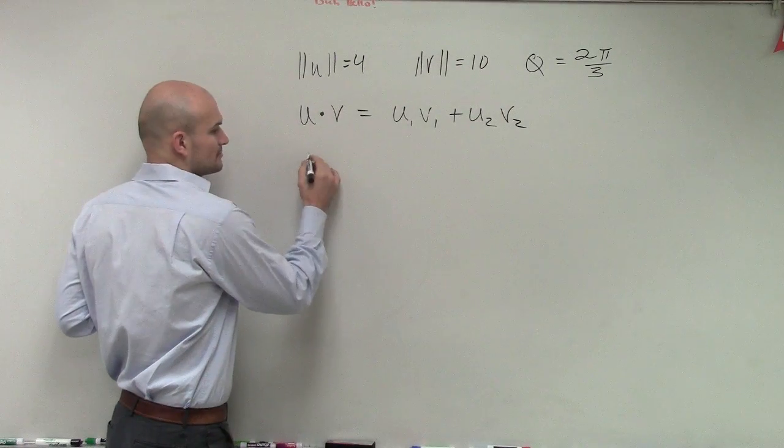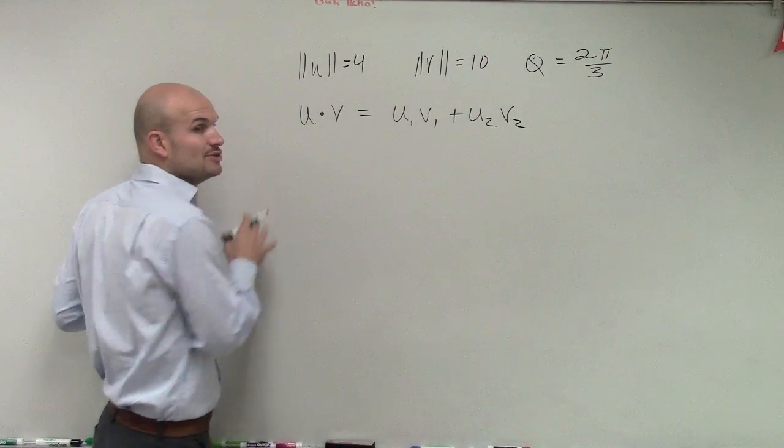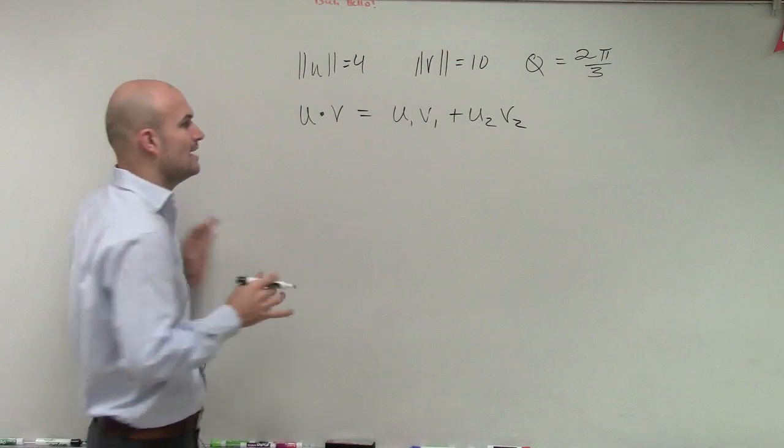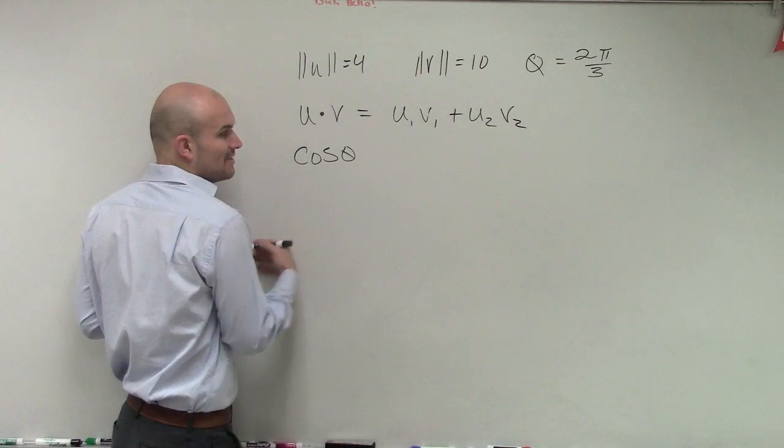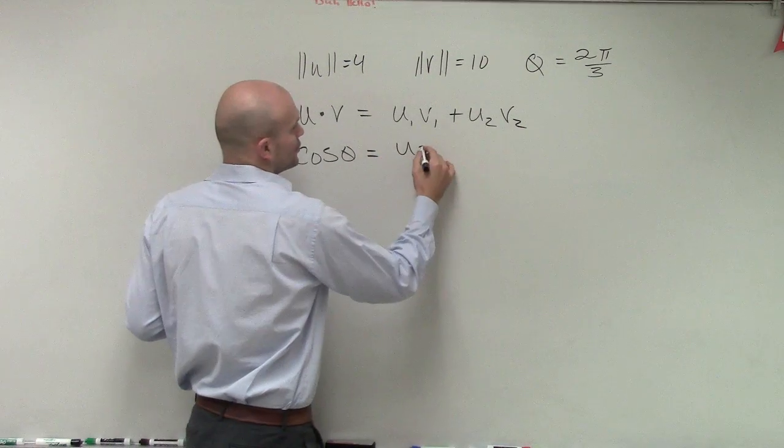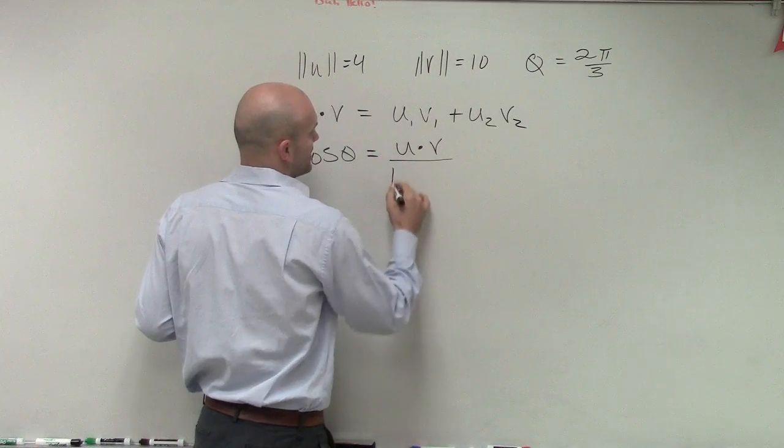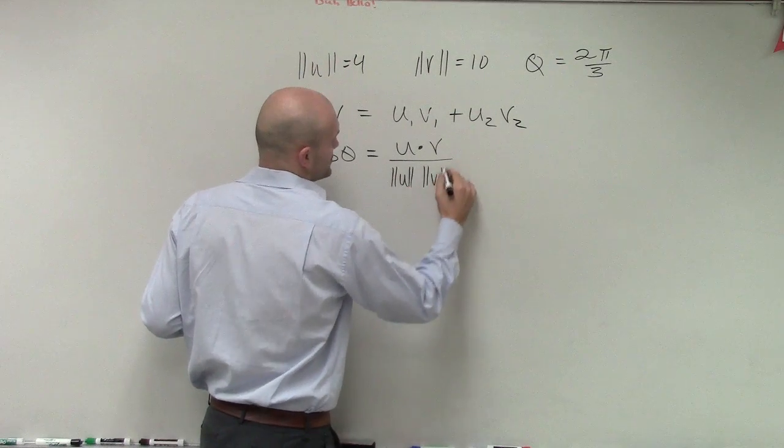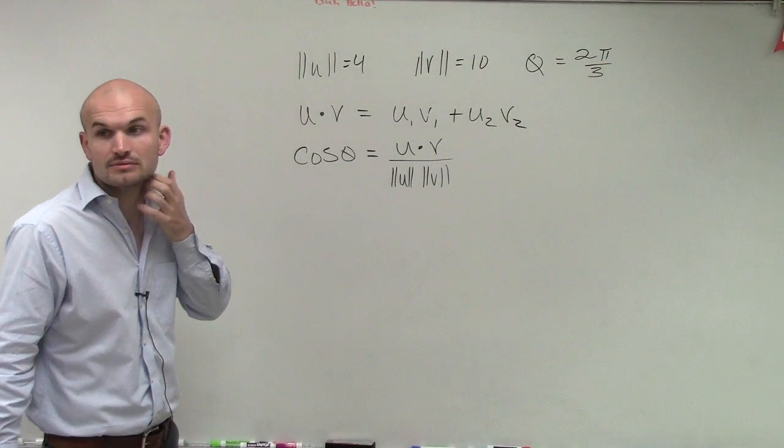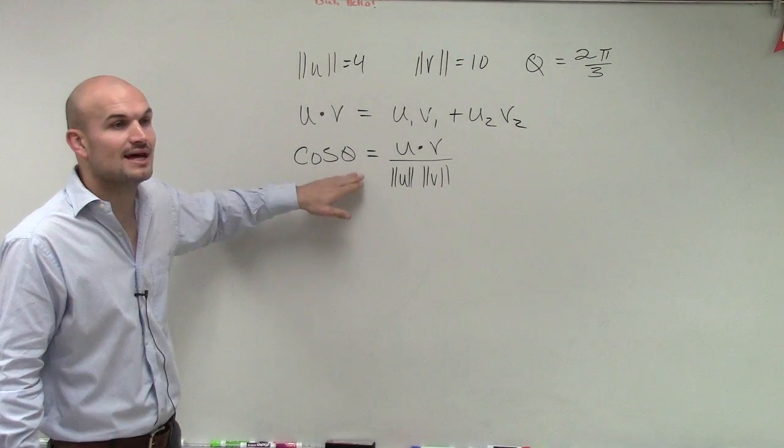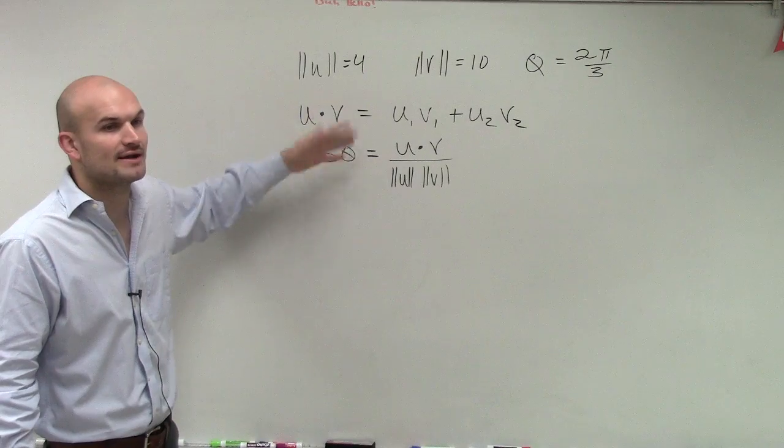So, therefore, the next thing we did talk about is we knew that the angle between two vectors, we could find by using cosine of theta equals u dot v divided by the magnitude of u times the magnitude of v, right? This is what we did last class. We talked about how to find those two.